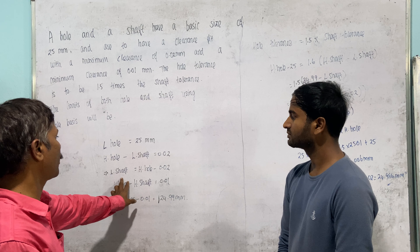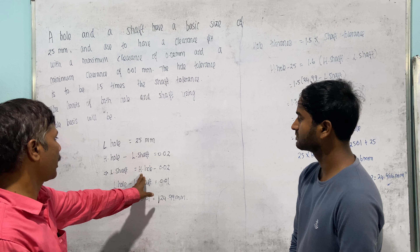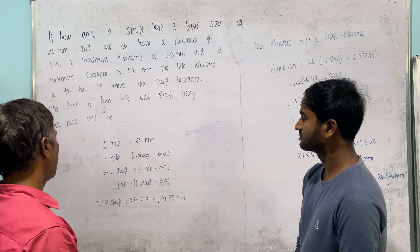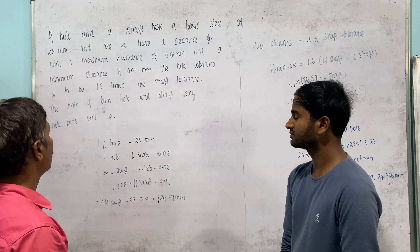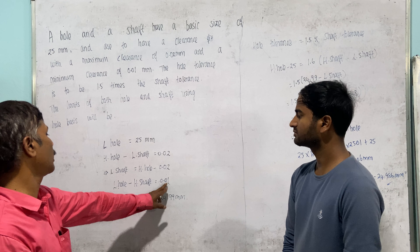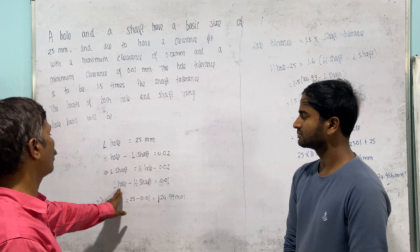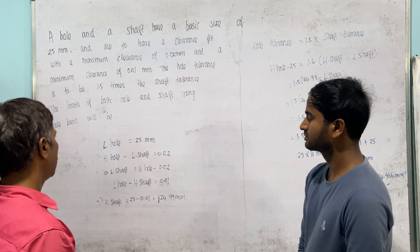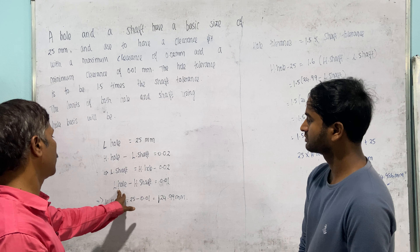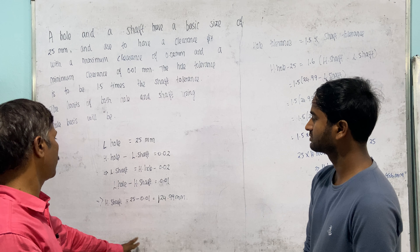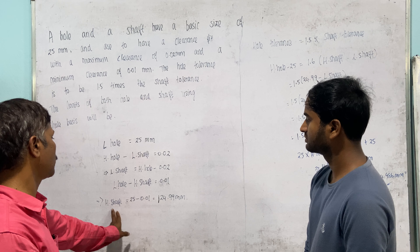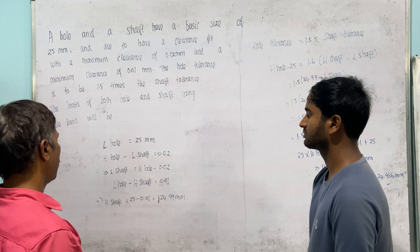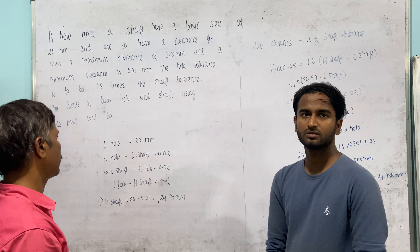So, the lower limit of the shaft equals the upper limit of the hole minus 0.02. The minimum clearance is 0.01, which equals the lower limit of the hole minus the upper limit of the shaft. So, lower limit of hole minus upper limit of shaft equals 0.01.